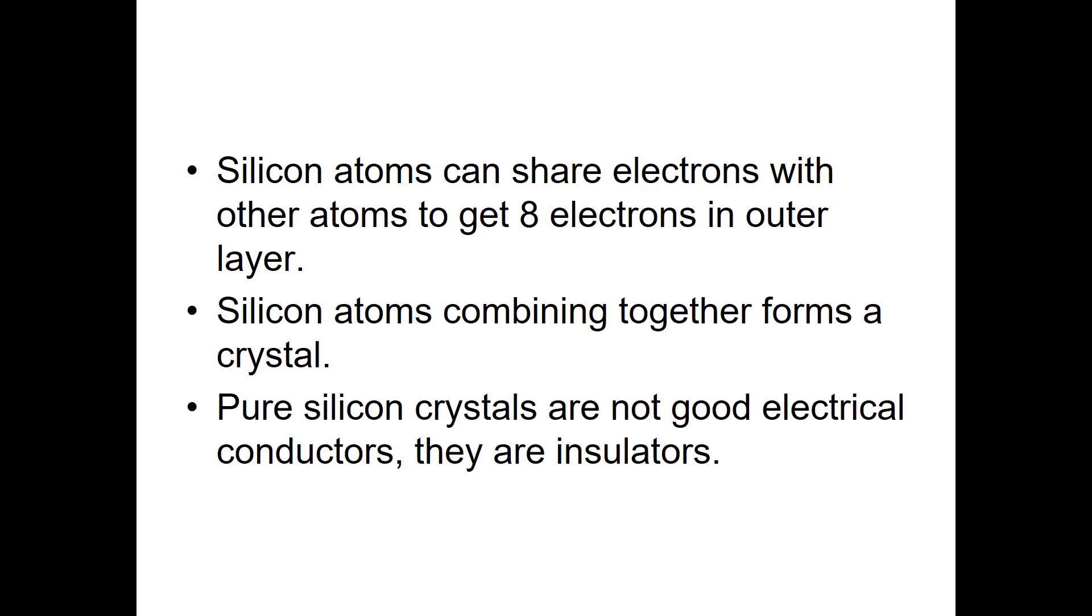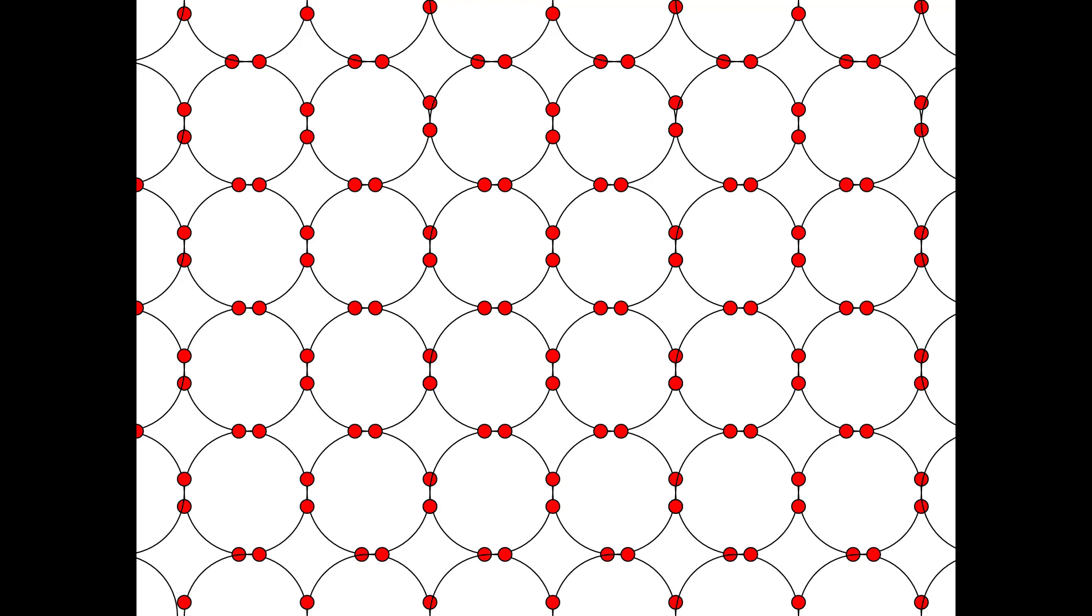Pure silicon crystals really are not good electrical conductors. They're actually insulators. This diagram is trying to show, if you look at any individual silicon atom, say this one here, it has four outer electrons, but it's sharing with four of its neighbors. So it's got four of its own plus four that it's sharing, so this atom now is more stable.